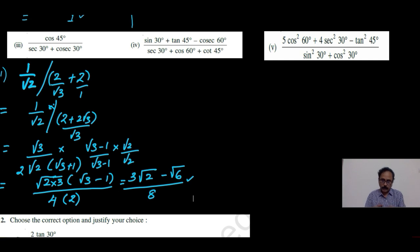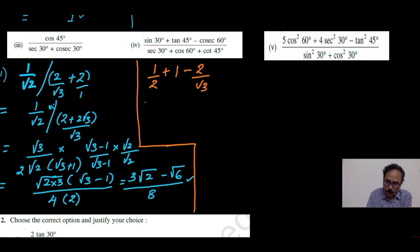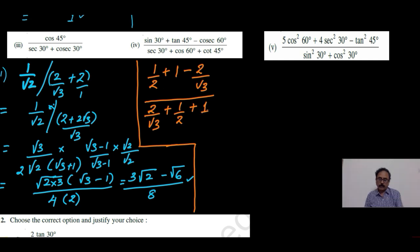Now let us solve the next problem. Here it is sin30 which is half, plus tan45 that is 1, and cosec60. Now here the LCM is 2 root 3, plus cos60 that is half, plus cot45 that is equal to 1.